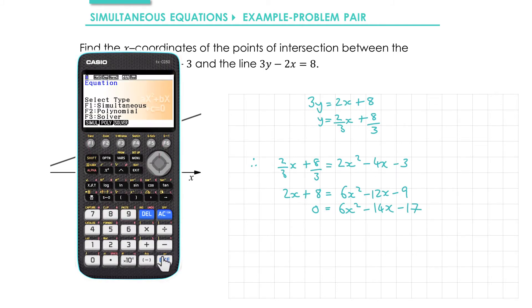So I go into equation mode, I choose polynomial and degree 2, and then I enter 6, negative 14, and negative 17. Pressing execute gives me my two solutions. I get 7 plus root 151 over 6 and 7 minus root 151 over 6, which I can combine together to give 7 plus or minus root 151 over 6.